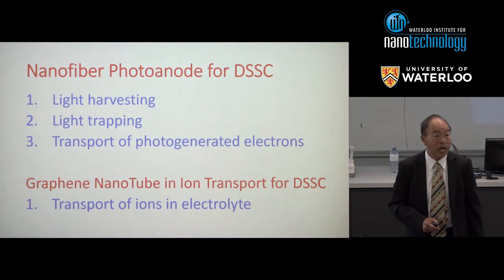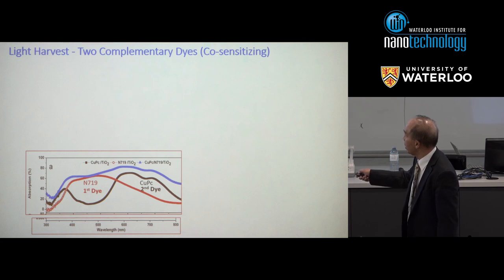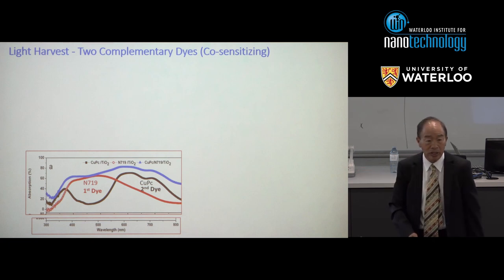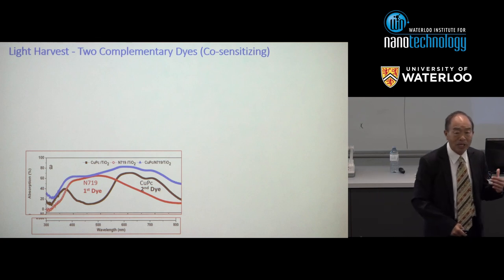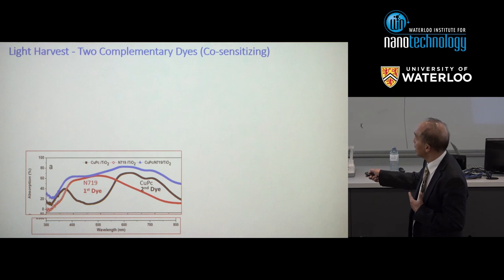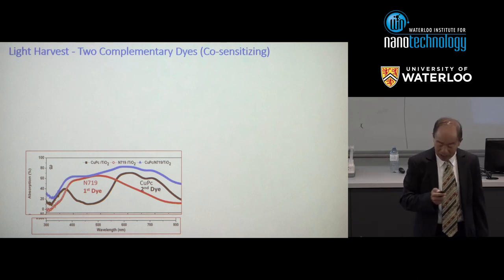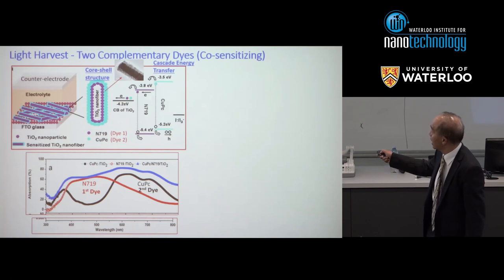We'll look at four areas where nanofibers can improve these deficiencies. First, light harvesting. We typically use N719 dye which harvests light from slightly less than 400 to 600 nanometers. We use a second dye called copper PC, which has both inorganic and organic components and can harvest a different part of the spectrum, so together they cover a wider range.